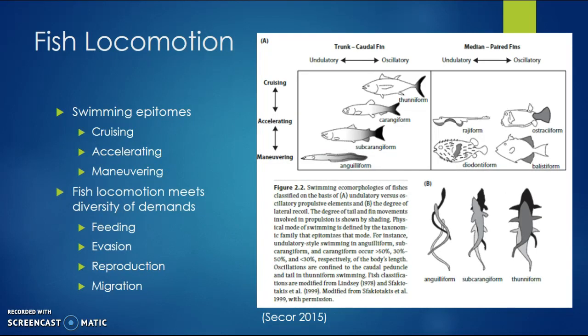Fish locomotion is affected by many factors. The shape of their tail can affect their ability to cruise, accelerate, or maneuver. They also have undulatory and oscillatory factors that play within the fish. As you can see here, some structures allow for undulating swimming while others allow for oscillating swimming.